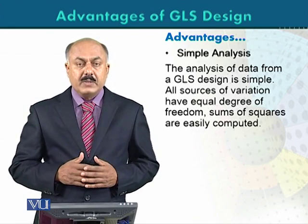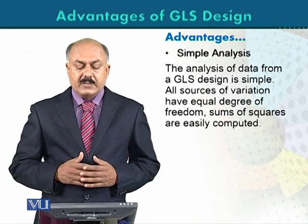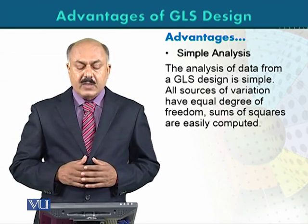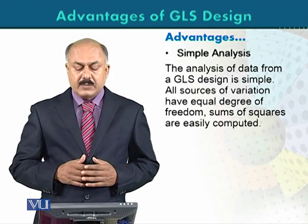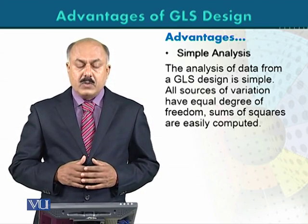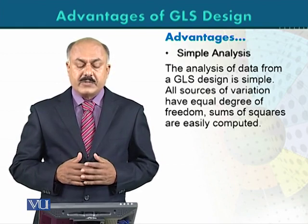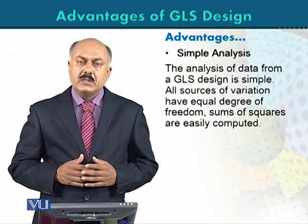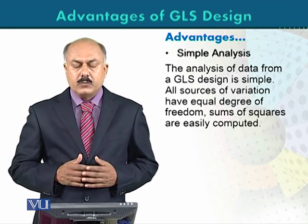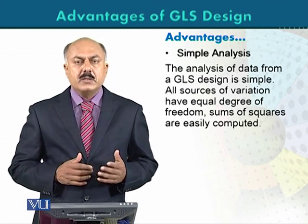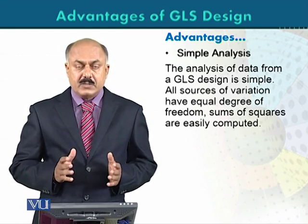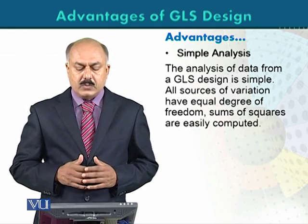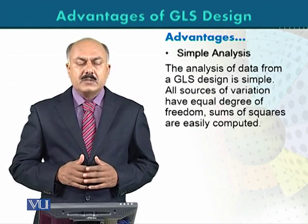The second advantage is simple analysis. The analysis of data from a Greco-Latin square design is simple because all sources of variation have equal degrees of freedom, and sums of squares are easily computed. When we construct ANOVA with a Greco-Latin square design, all sources of variation have equal degrees of freedom, that is P-1. For example, in a 4x4 Latin square, every degree of freedom is 3. The sum of squares structure is also almost identical, so this analysis is comparatively simple.